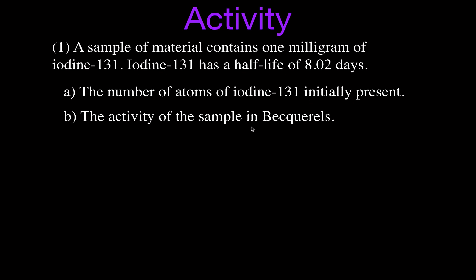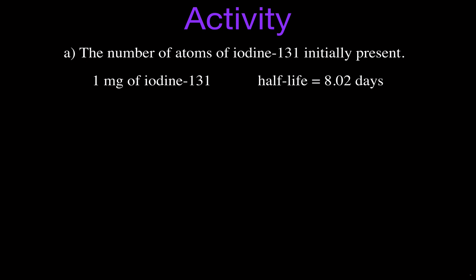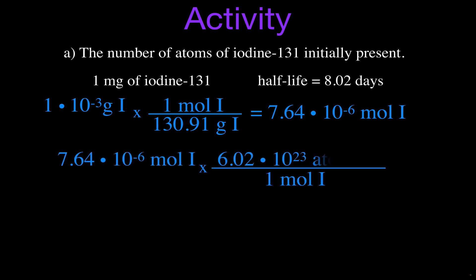We want to know the activity of that sample in Becquerels. First, in order to figure out the activity, we have to know how many atoms we have. We have one milligram — that's 1 times 10 to the minus 3 grams — and we're going to convert that using the molar mass. The molar mass of iodine-131 is 130.91 grams per mole. The grams cancel, and we're left with 7.64 times 10 to the minus 6 moles. Multiplying by Avogadro's number, 6.02 times 10 to the 23rd, gives us 4.60 times 10 to the 18 atoms of iodine.